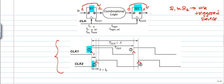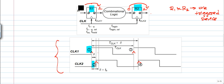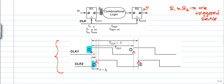When these registers receive the positive edge, they simply transfer the digital data from D side to Q side. Once it is transferred, we forget about that input data. The output of R1 is given to the input of the combinational logic circuit, which computes its output and passes it to register R2.